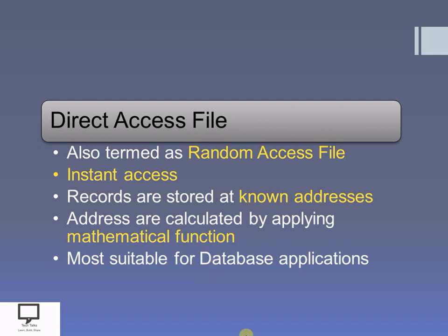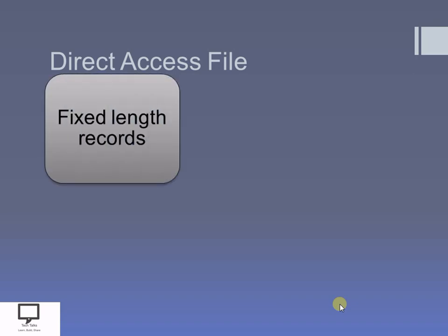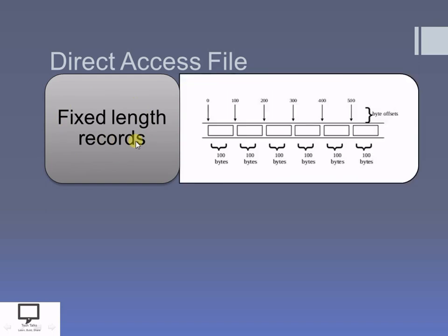Database applications mostly use these direct access files. In the next slide, I am explaining how the records can be accessed directly. The very first thing we need to keep in mind is that to access a record directly, the length of all the records must be fixed or equal. This diagram explains that suppose these are the number of records available, where every record is of size 100 bytes. If the size is known or fixed, then the address calculation is very easy, which is helpful to go to that address location directly.